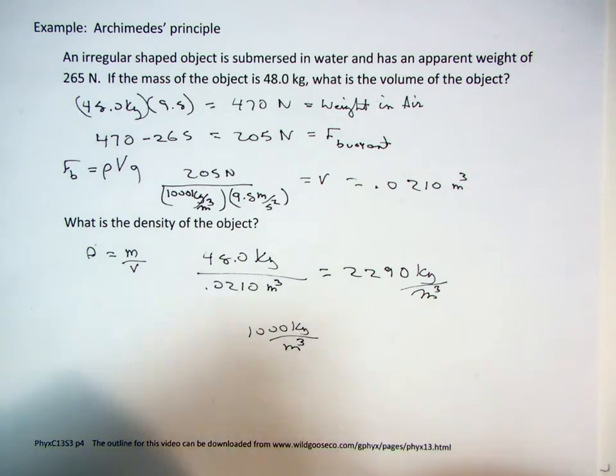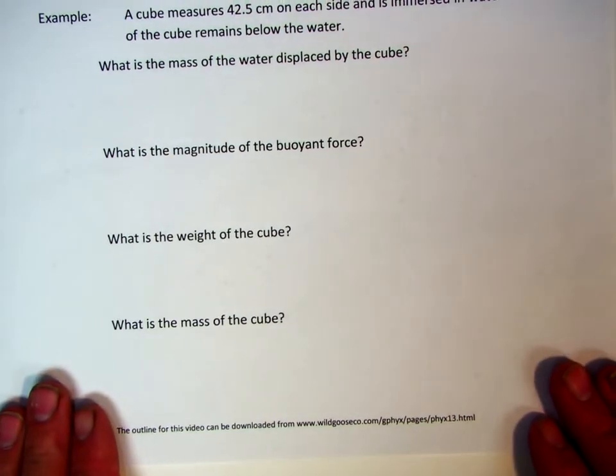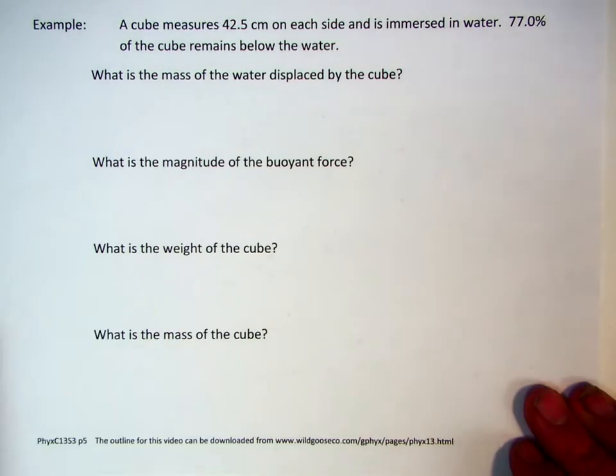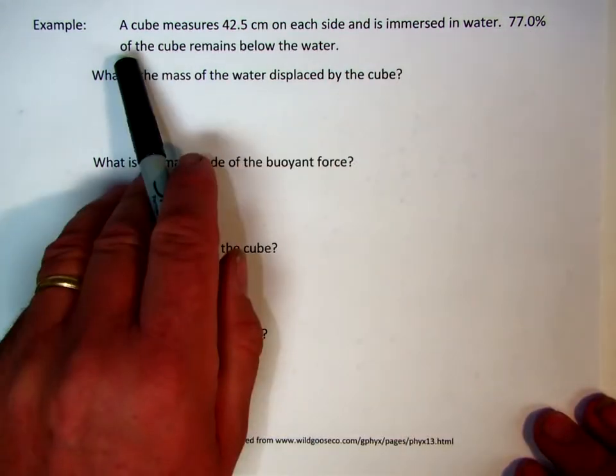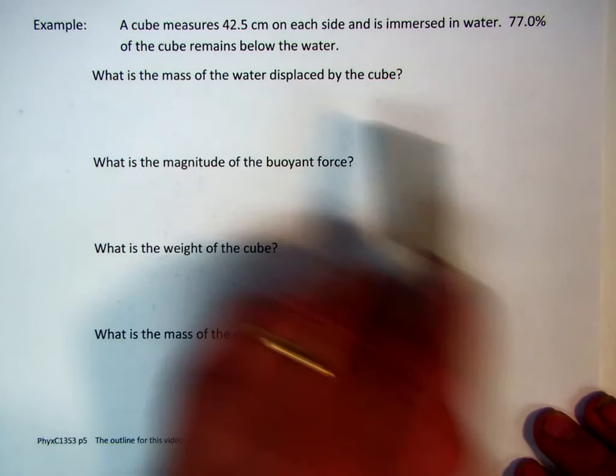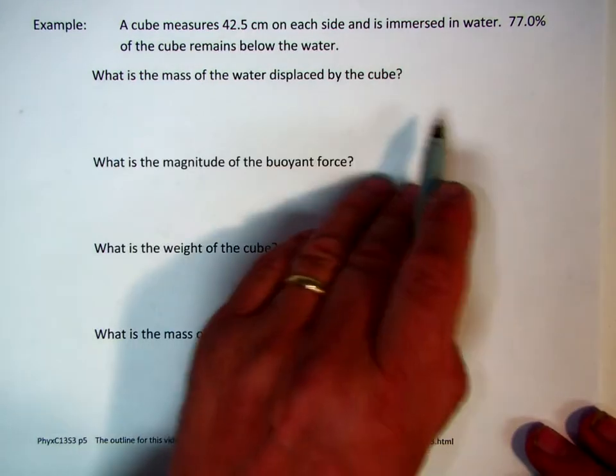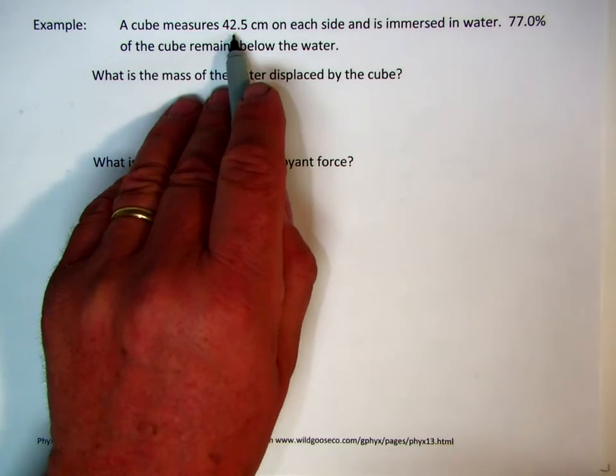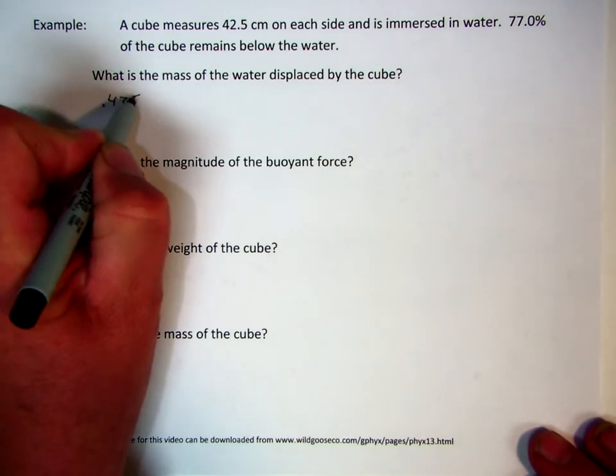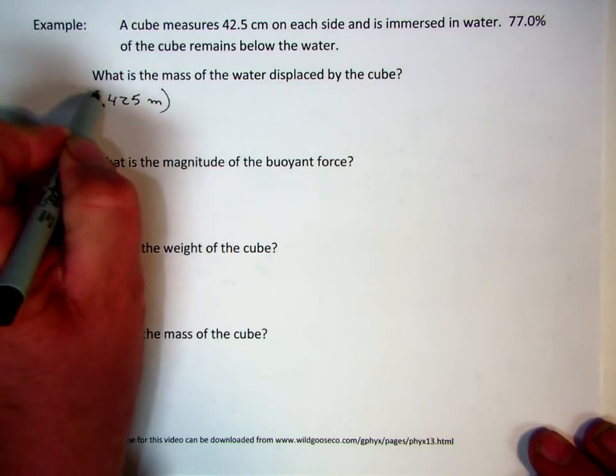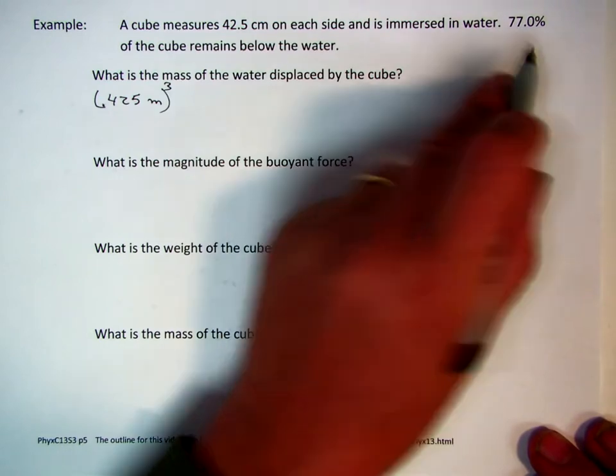Well, let's take a different approach to the same logic then. A cube measures 42.5 centimeters on each side and is immersed in water. 77% of the cube remains below water. What is the mass of the water displaced by the cube? Well, the first thing you better recognize is we've got to have the volume so we can calculate the mass. And it better be in meters cubed, not in centimeters cubed. So, we're going to say that 0.425 meters cubed is equal to the volume.